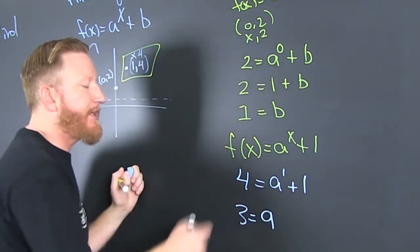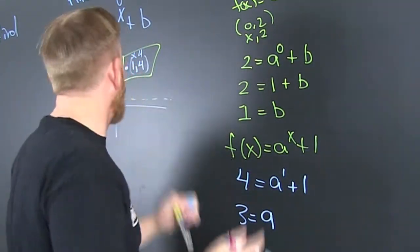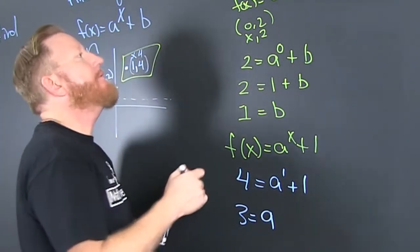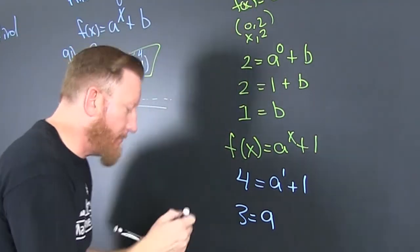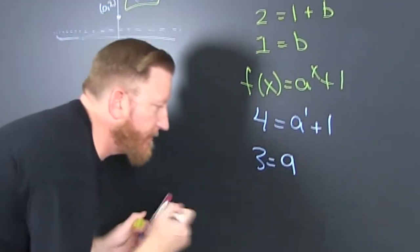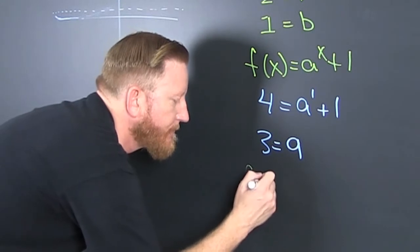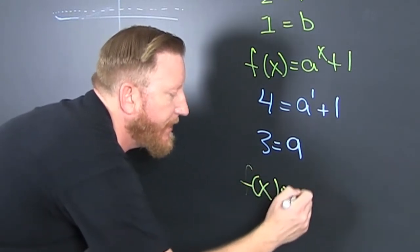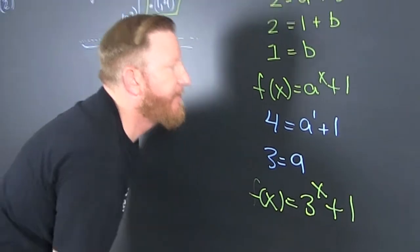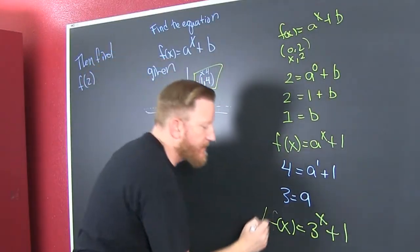Because I subtracted that 1 off there, see? So, in one nice type package, I have that my f of x. That's going to be 3 to the x plus 1. Fun. Because we found it.